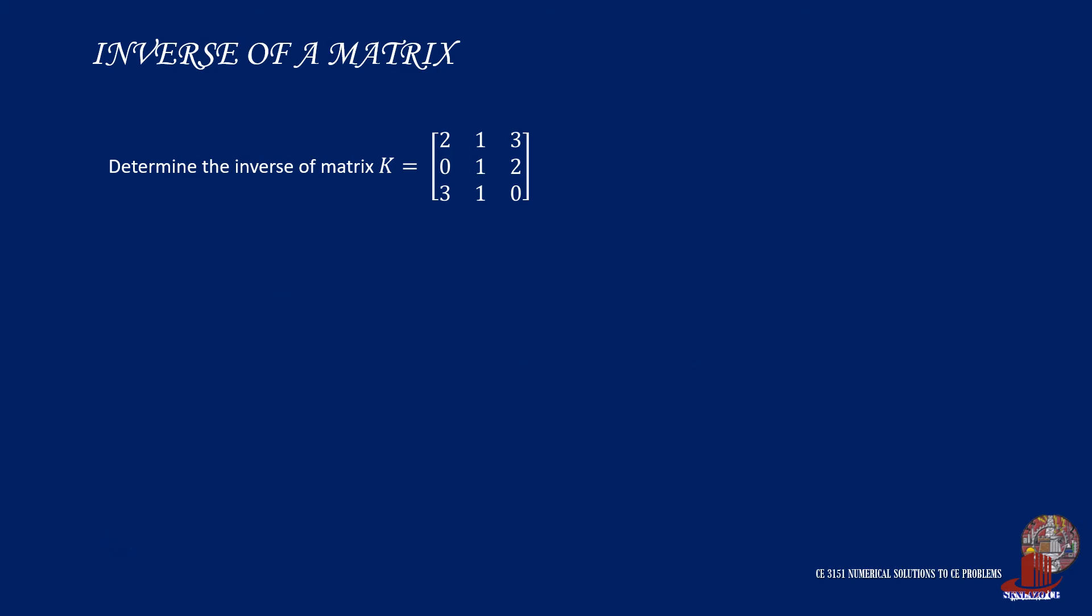Next is to take the cofactor matrix. So, starting with element 1,1, we get 1, 2, 1, and 0. The cofactor of element 1,2 will be taken as negative of the submatrix 0, 2, 3, and 0. Element 1,3 will be positive, and the elements involved are 0, 1, 3, and 1.